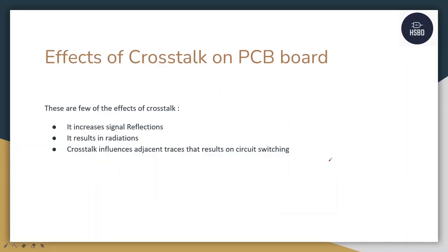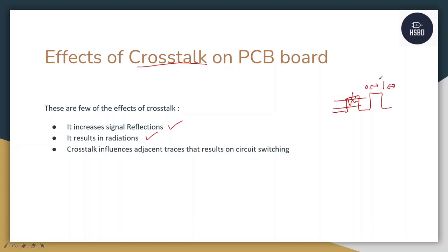Let us discuss a few of the effects of crosstalk on the PCB board. First, it increases signal reflection — whenever there is crosstalk, signal reflection will increase in both the victim and aggressor transmission lines. Second, it results in electromagnetic radiation, which increases. Because of these radiations, signal switching may happen — for example, if you are sending 0 1 0 1, there might be a chance you will read a 0 as 1 or a 1 as 0. That is false switching.